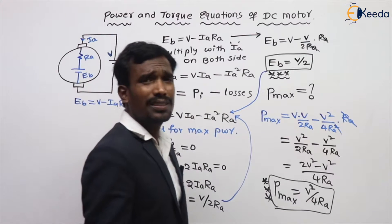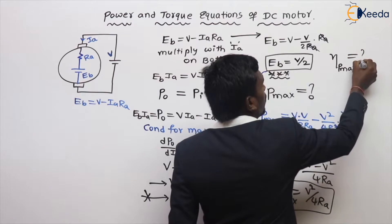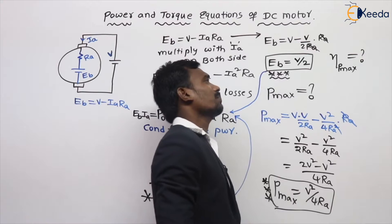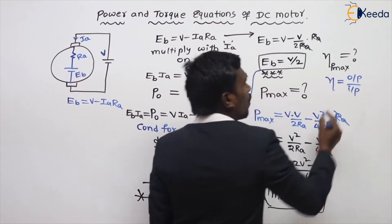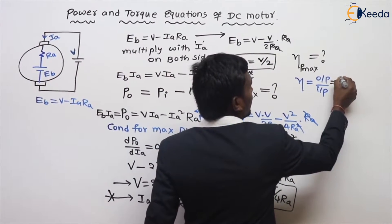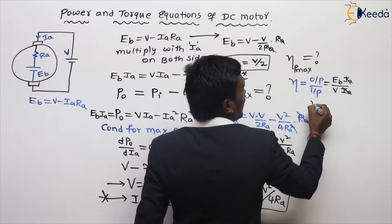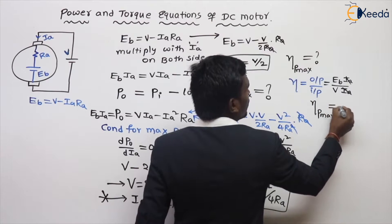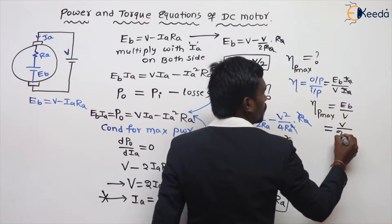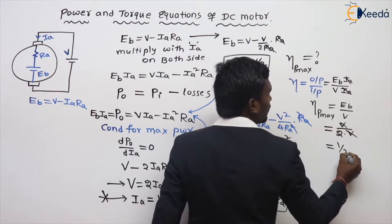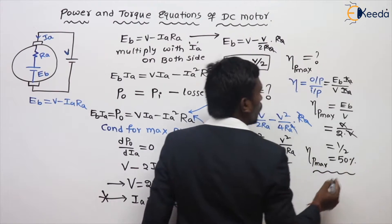They will also ask: what is the efficiency at maximum power? Efficiency equals output by input, which is EB times IA divided by V times IA. IA cancels, so efficiency at maximum power equals EB by V. At maximum power, EB equals V by 2, so efficiency equals V/2 divided by V equals 50%. This is the well-known answer.